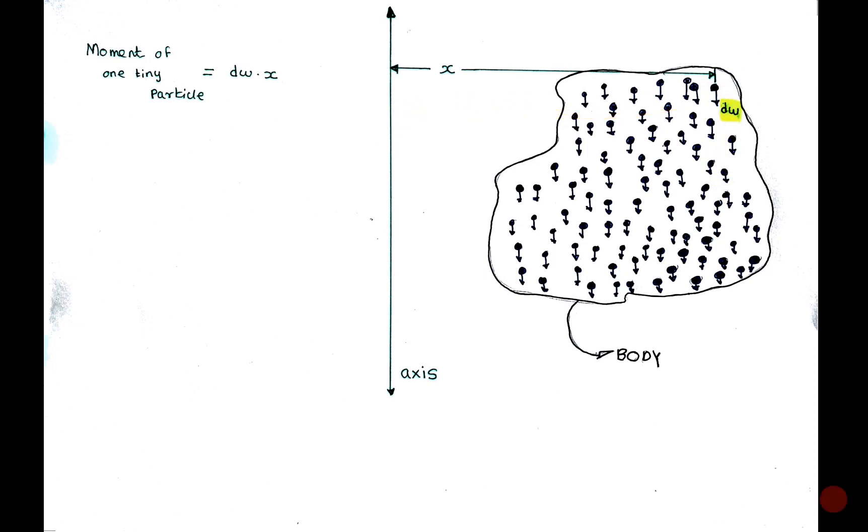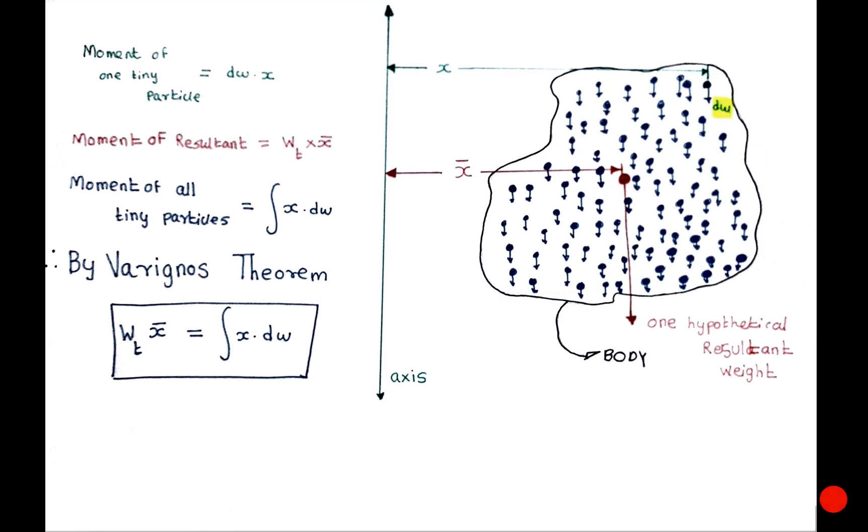Now, one must understand that dealing with so many tiny particles or tiny weights is somewhat difficult. So, for the sake of ease, I will assume one hypothetical resultant weight passing through a point on the body.